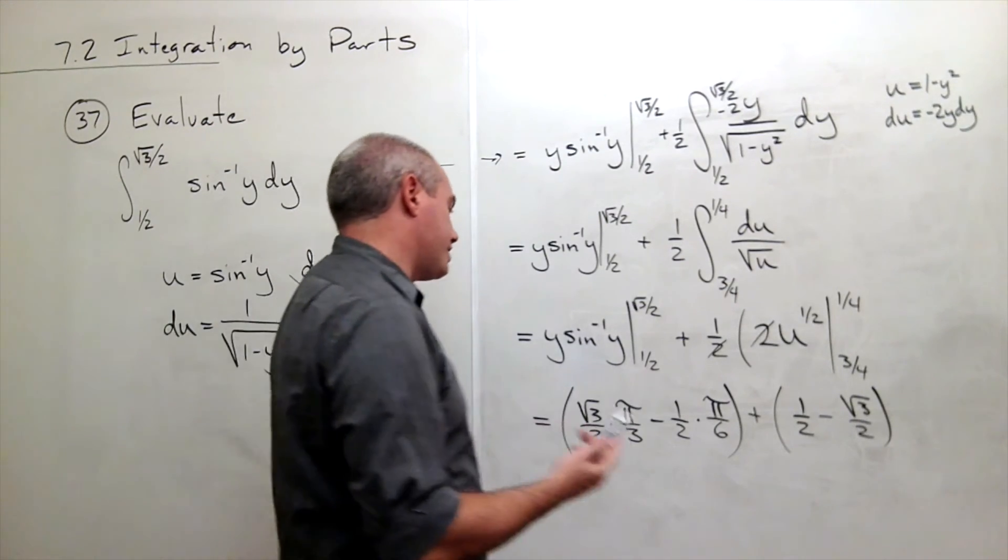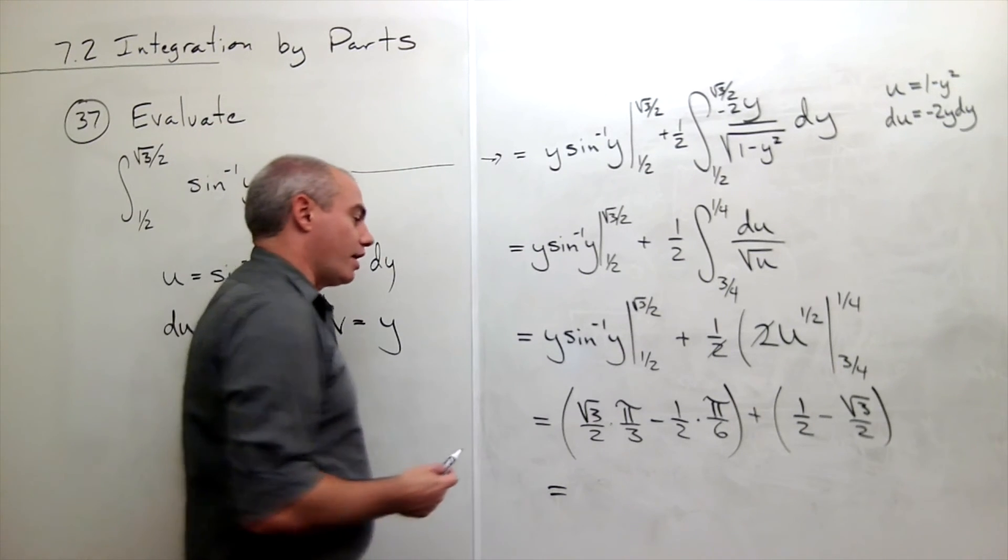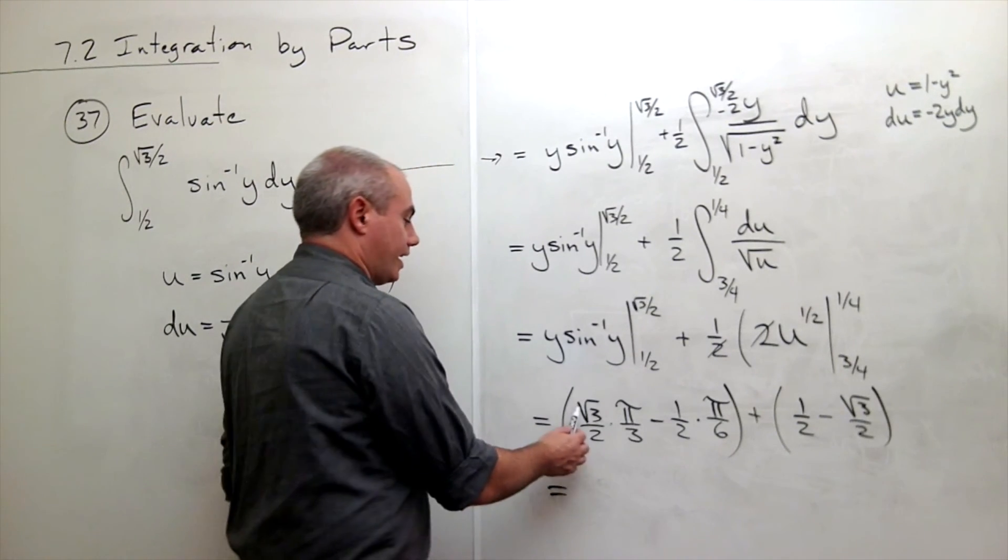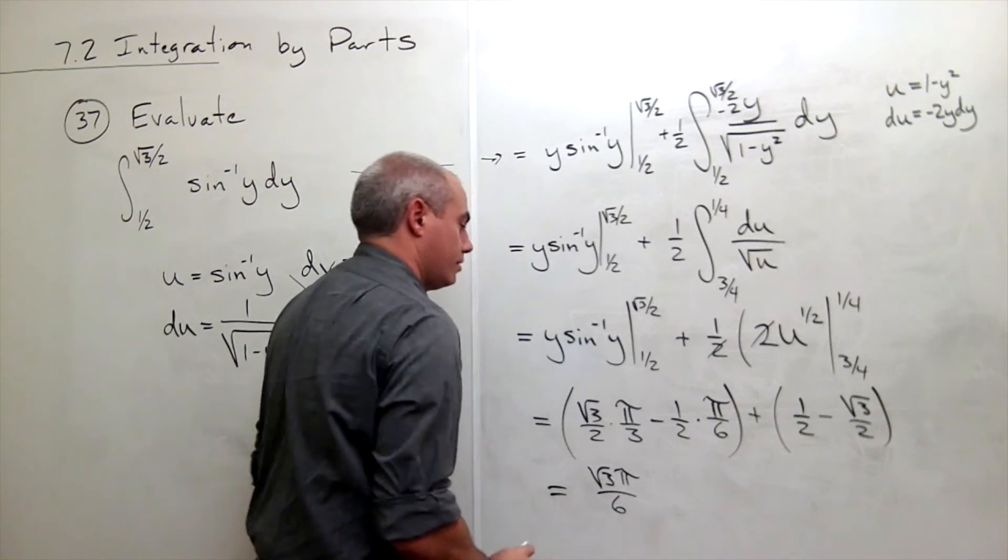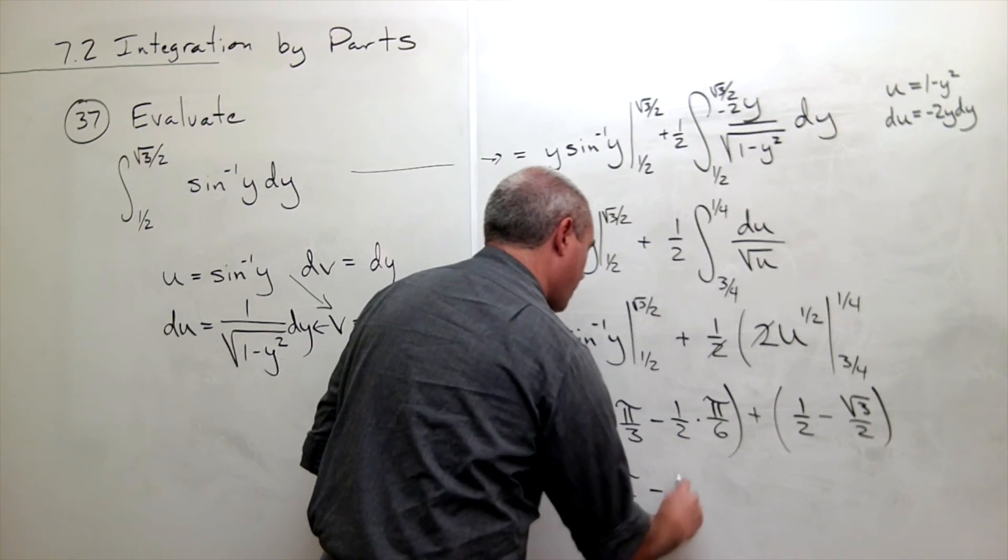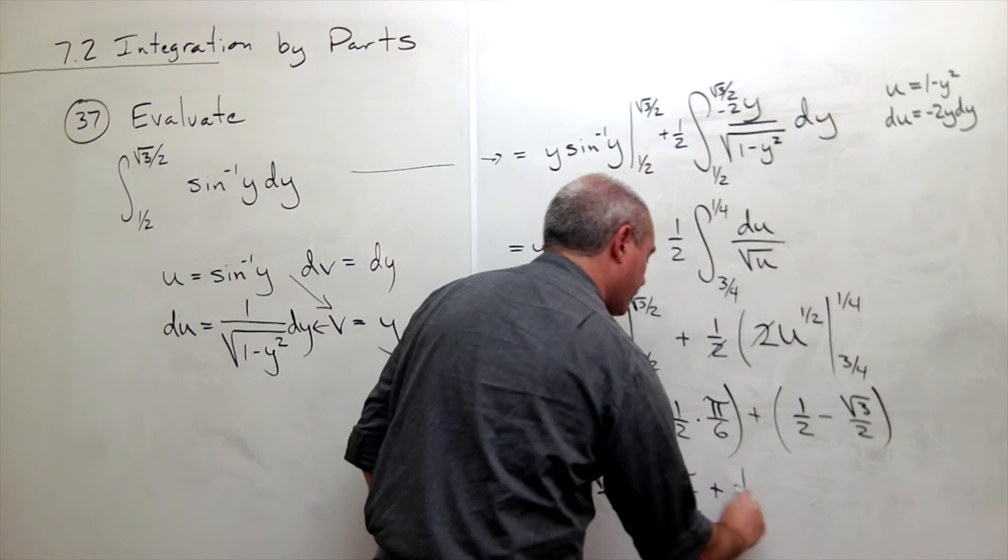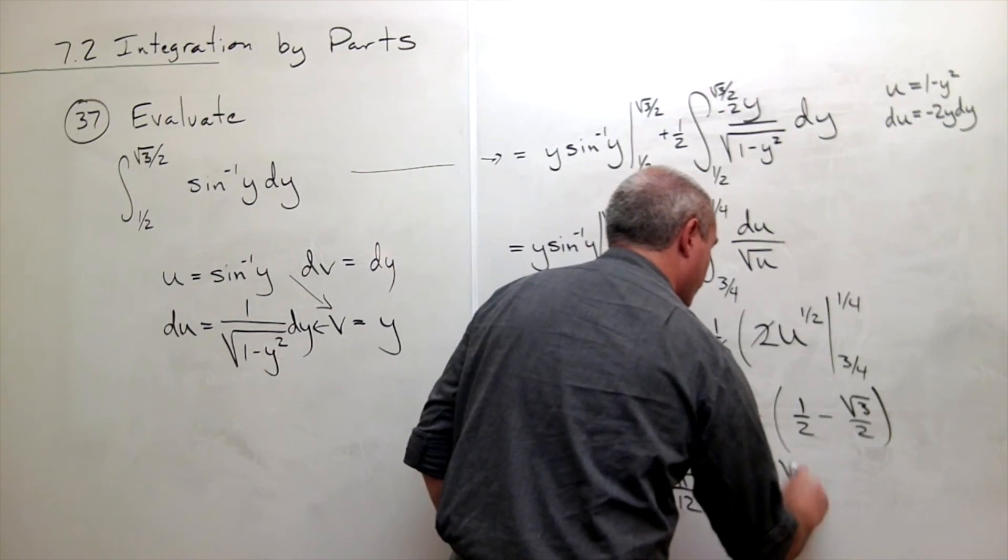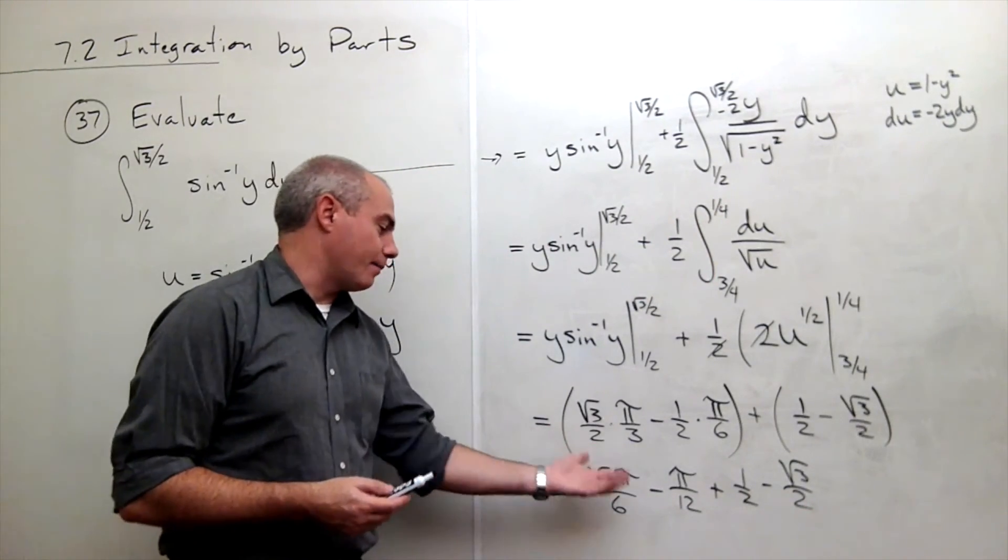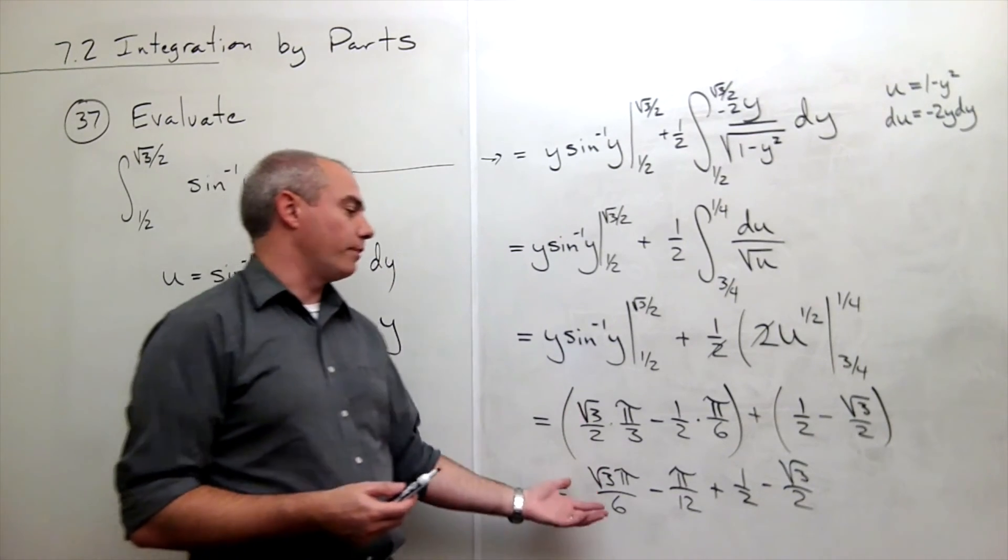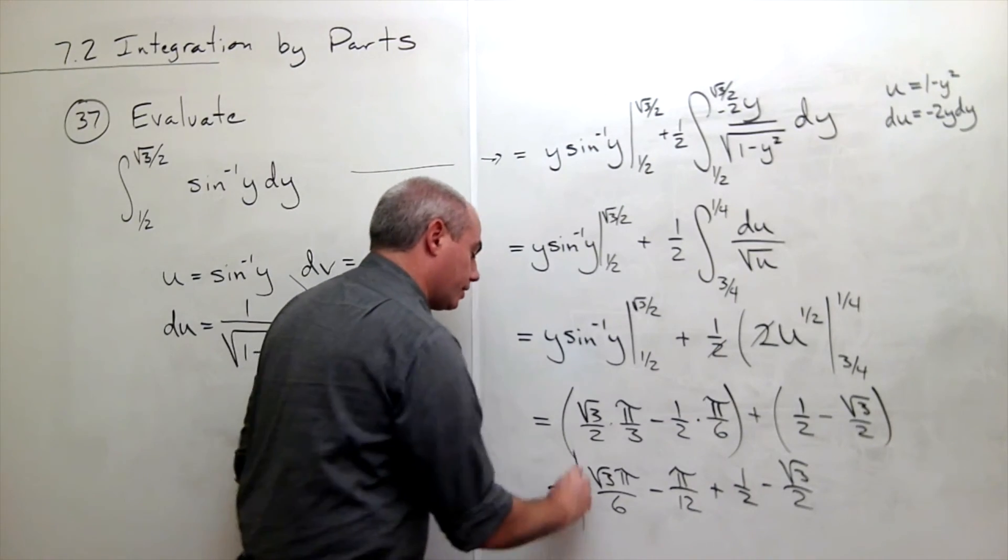So what is the final answer here? I could simplify this a little bit, not a lot. I get the square root of 3 pi over 6 minus pi over 12 plus 1 half minus root 3 over 2. Now, if I wanted to, I could combine some of these things into one fraction. I could get a common denominator of 12. Maybe we could make this look a little prettier, but at the end of the day, this is my final answer.